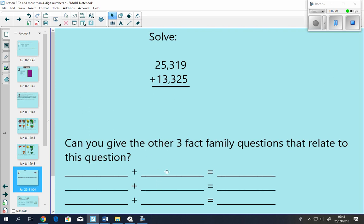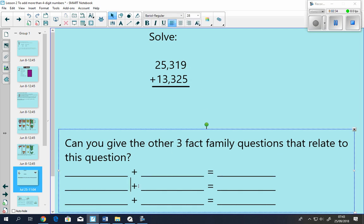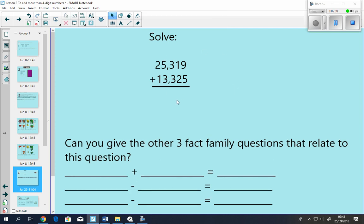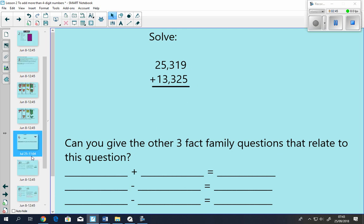If you can solve this one, can you tell me the other three fact family questions? So, this here plus this equals something. And the idea is, you should be able to tell me if this plus this is this number, then this number plus this number is also this number, and what are the other fact family items in that question?